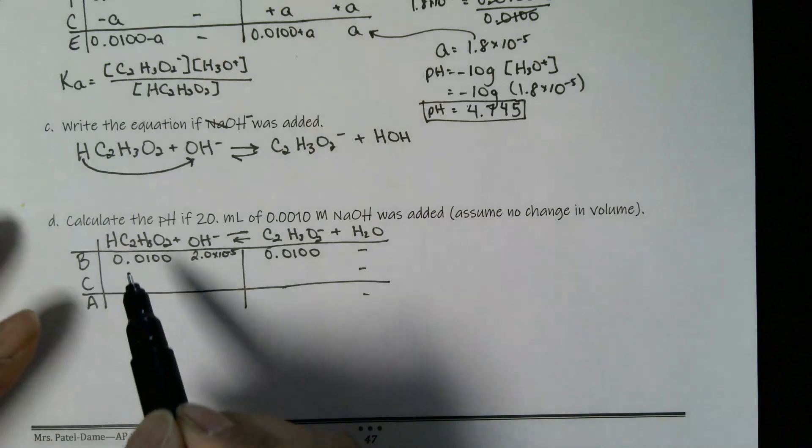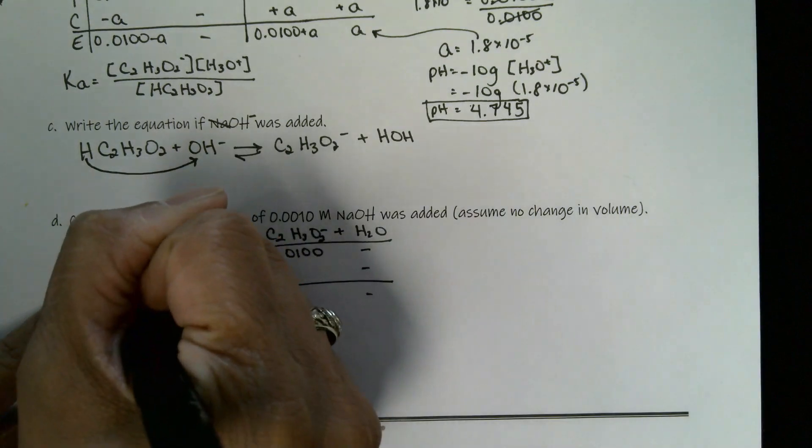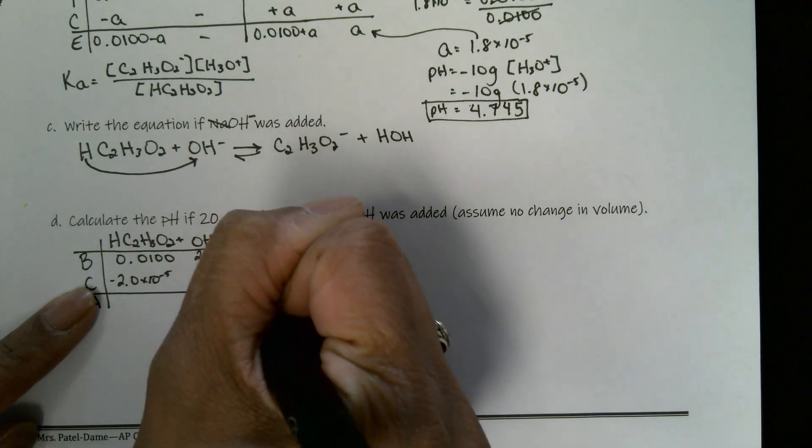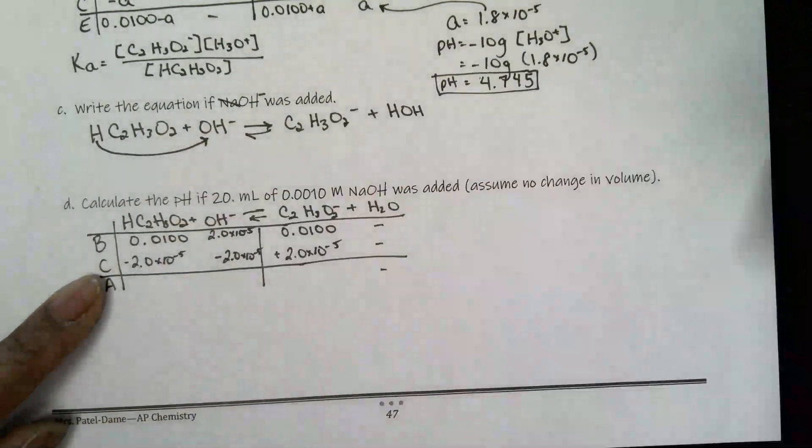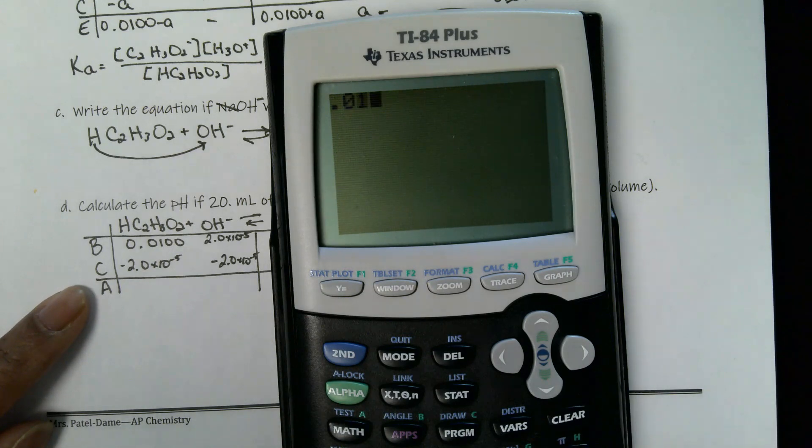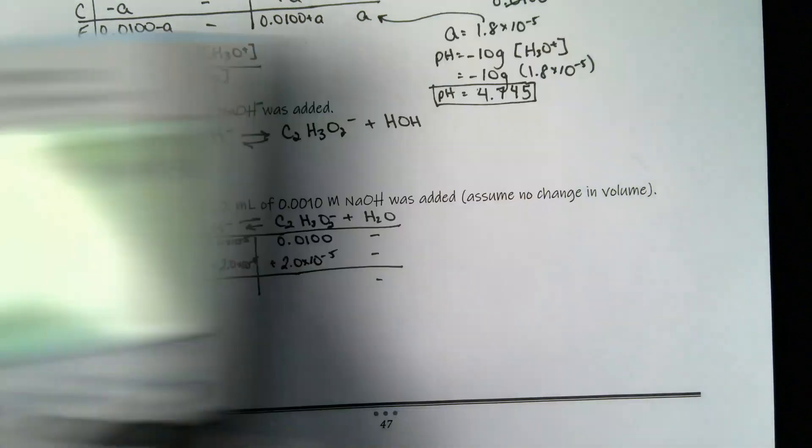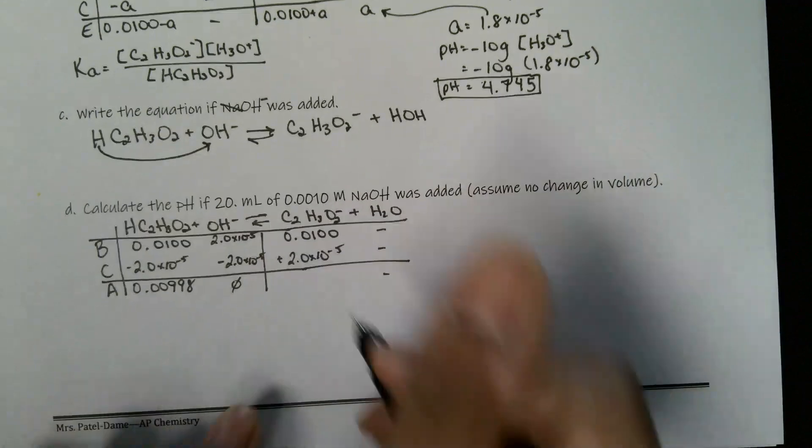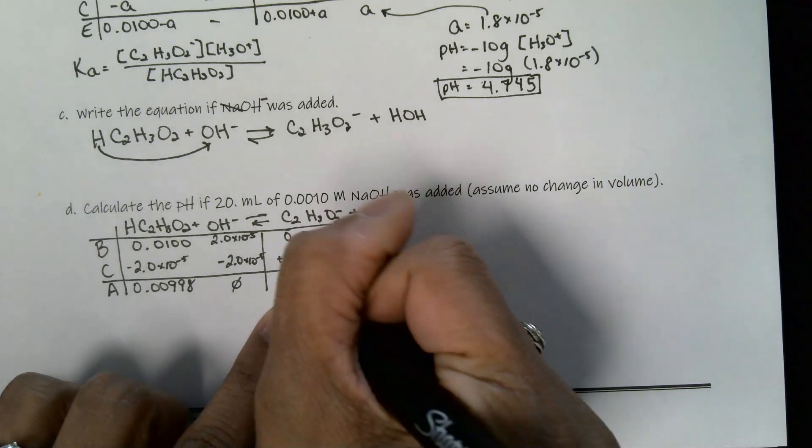So I'm going to, for the change, subtract out the smallest amount in my reactants. So my smallest amount is this 2.0. So I'm going to do minus 2.0 times 10 to the negative 5th, subtracting them out from each of these things over here on the left-hand side. And adding it over here on the right-hand side. So when I subtract out these 2, 0.01 minus 2.0 times 10 to the negative 5th. Don't forget that E button. So I've got 0.00998. This is 0. And then I'm going to add the 2. So 0.01002.